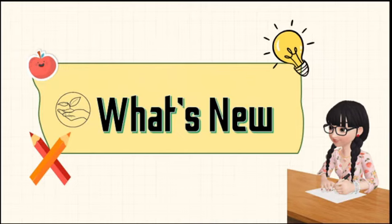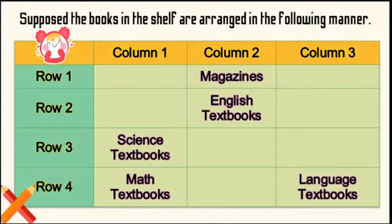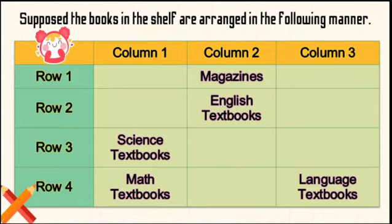Now, let's proceed to What's New. Activity: Identify the Location on page 6. Suppose the books in the shelf are arranged in the following manner. Describe the location of the books by writing the row number and the column number. For example, in what row can you find the magazines? That is in row 1. How about its location in column? It is in column 2. We can describe the location of the magazine using row and column number by writing 1 and 2.